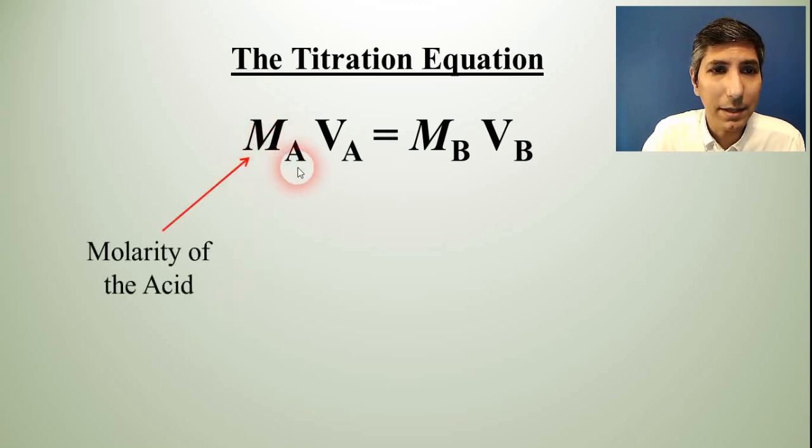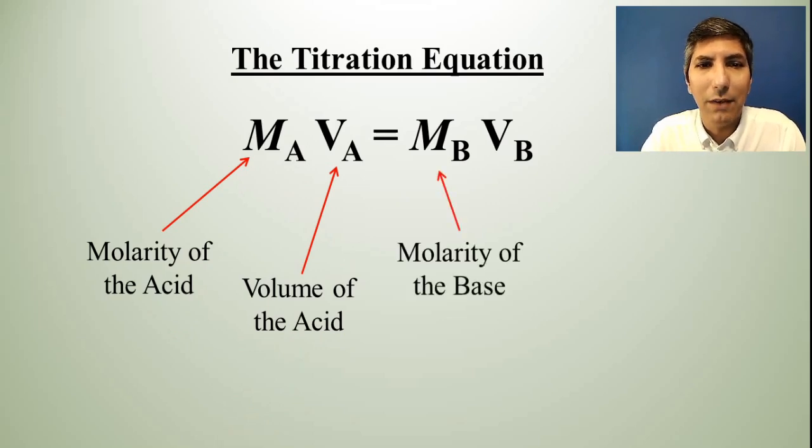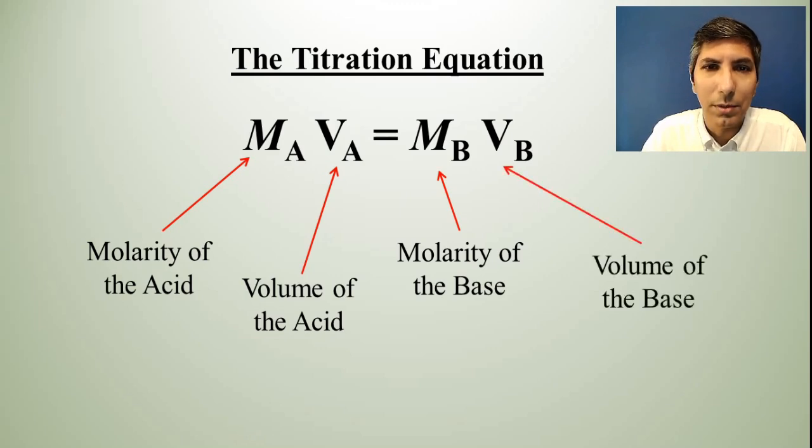Now, the M sub A stands for the molarity of the acid. And that may be given to us in the problem. We might have to calculate that, whatever the case may be. V sub A is the volume of that acid. M sub B is the molarity of the base. And then V sub B is the volume of the base. Of course, molarity is moles per liter. Volume is normally going to be in milliliters. And it is okay to leave it in milliliters in this equation as long as you're consistent with your units.